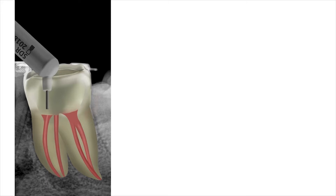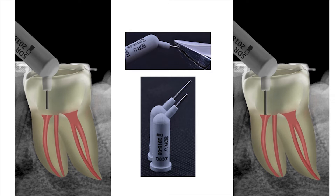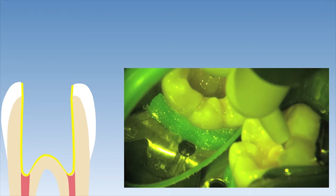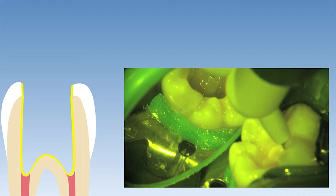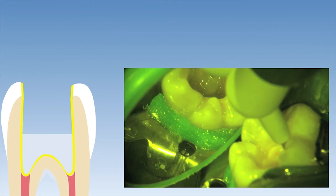The next step is to fill up the bulk of the cavity with SDR flowable bulk fill material. It is very important to make sure that the delivery tip of this material is placed directly onto the pulp floor; otherwise voids will be incorporated when we dispense this material. If the tip is too short to reach the floor, especially in deep access cavities, it is possible to pull the tip out with orthodontic pliers and extend it for a few millimeters. A thin layer of approximately 2 millimeters of SDR flowable bulk resin is then dispensed onto the pulp floor, covering the exposed gutta-percha material, and then light cured for 40 seconds.